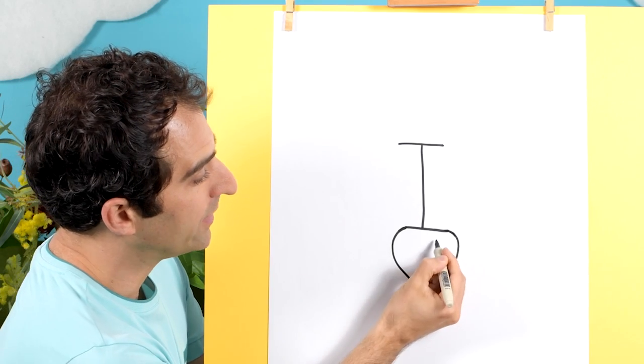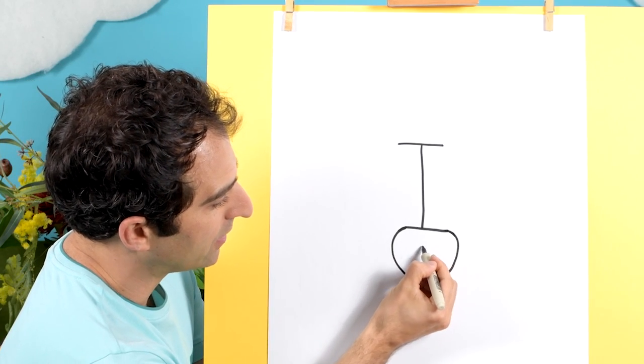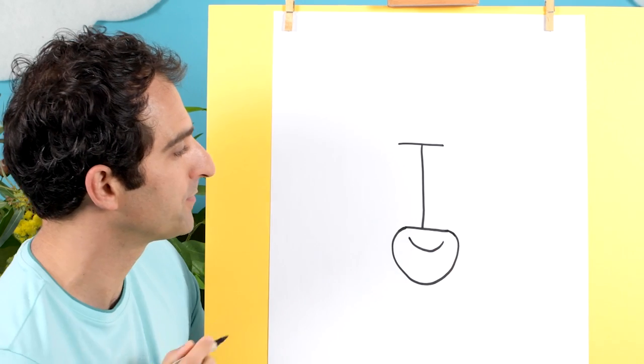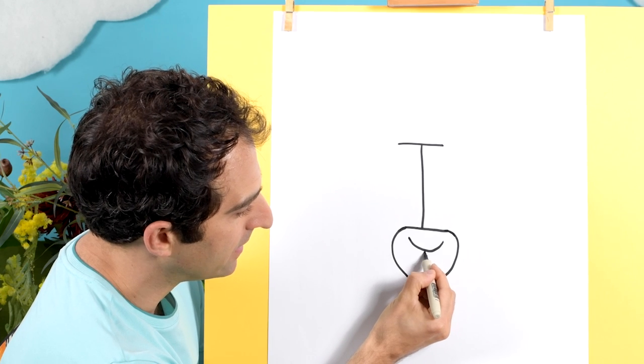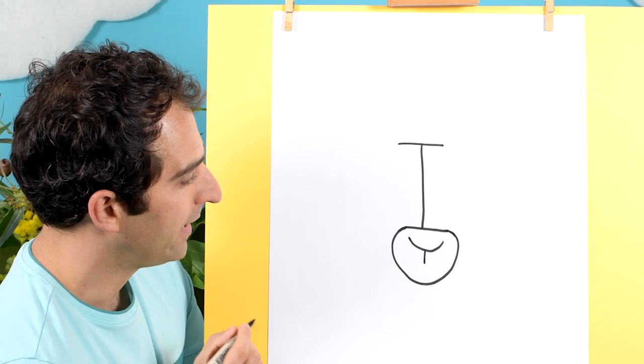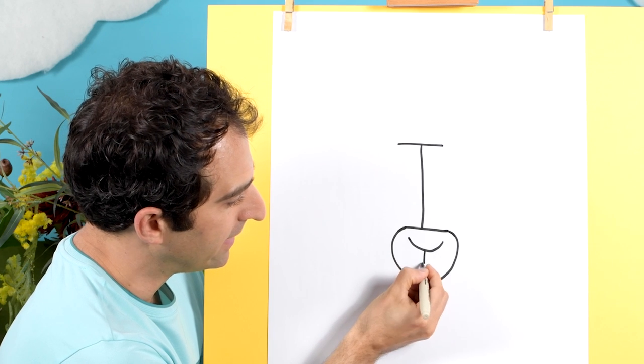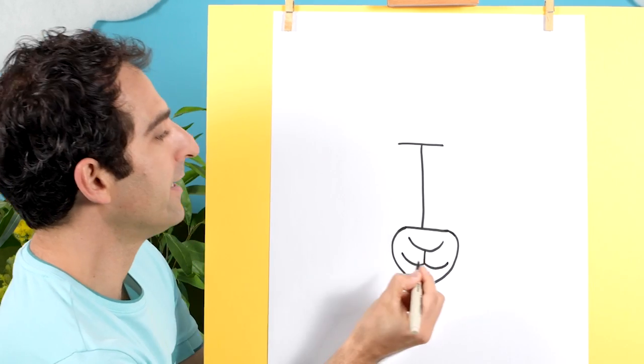Okay, now we'll be drawing the nose. So we'll be drawing a curved line here. It goes like that. And then a line from here, down, and then the mouth, which will be a curved line to here, and another one to here, like that.